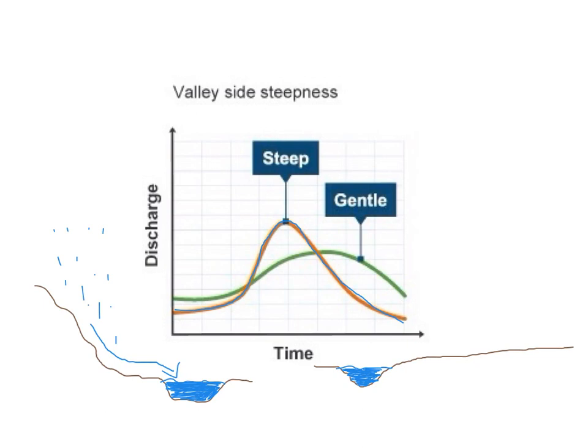It has a relatively short lag time, whereas when you have rain which falls on a gentle slope, it will take longer to make its way into the river. And this is why the gentle hydrograph here has a much longer lag time. It takes much longer to reach peak discharge before it then falls.